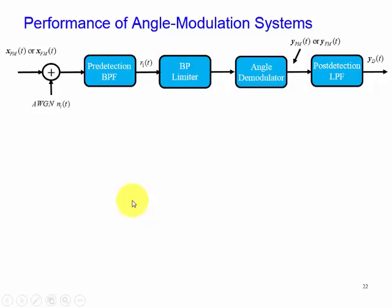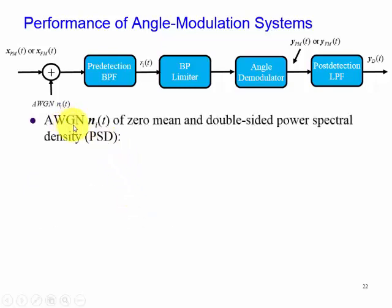So let's look at the noise. We had an additive white Gaussian noise with a mean of zero and it's a double-sided power spectral density such that the flat spectrum has a value of N₀ divided by 2.